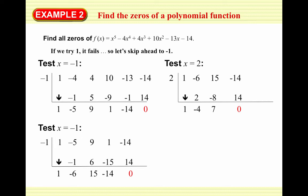For the sake of time, we skip to our next value of 2 — but in practice you would try negative 1 one more time with 1, -6, 15, -14, confirm it doesn't work, then move to 2. Testing x = 2: bring down 1, multiply by 2, and so on. It works — we have our third zero. So our polynomial equals (x + 1)(x + 1)(x - 2) times the quotient x² - 4x + 7. We've gotten it down to a quadratic.